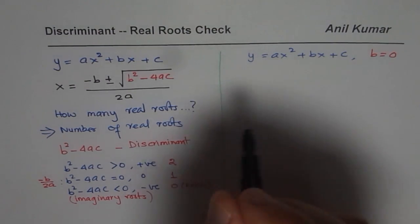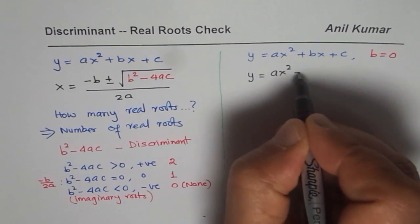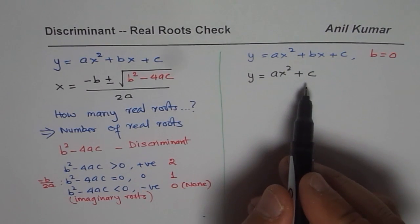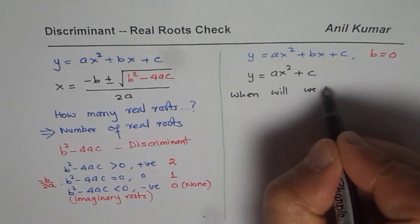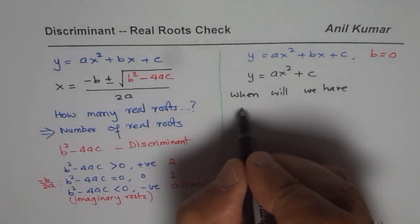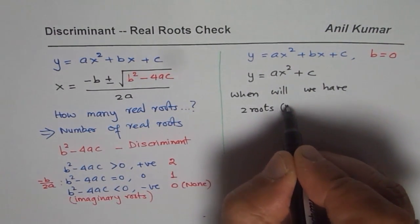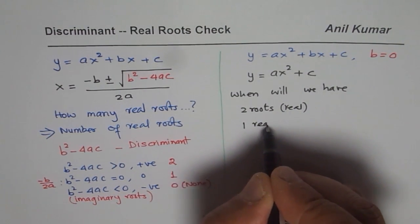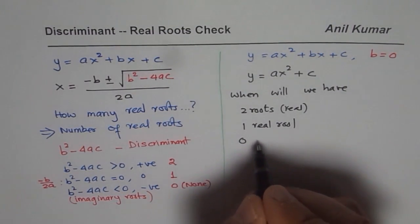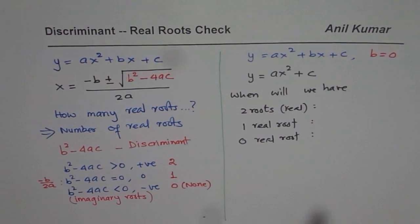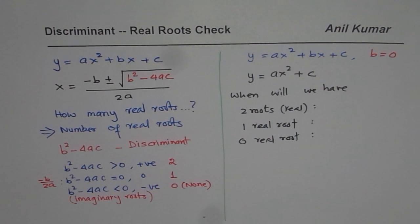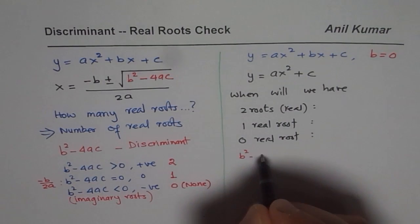If b is 0, then the equation becomes y equals ax squared plus c. Now the question is: when will we have two real roots, when will we have one real root, and when will we have zero real roots? You have to tell me for what values of c we can get two roots, one real root, or zero real roots. Let us check the discriminant, which is b squared minus 4ac.